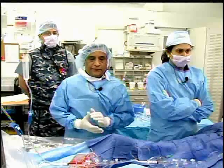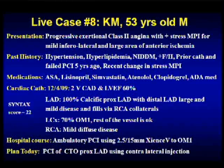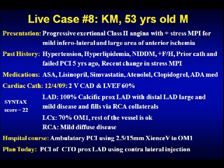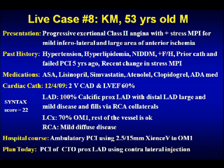This is a 53-year-old male with progressive exertional angina. He has a positive stress nuclear test showing infralateral and a large area of anterior ischemia. He has multiple risk factors, had a prior cath, and a failed PCI five years ago in New Jersey. About two months ago he had a change in symptoms and stress test results. On good medical therapy, cath revealed normal EF, normal left main, and 100% LAD occlusion proximally, with extensive collaterals from the RCA. The RCA was non-obstructive.